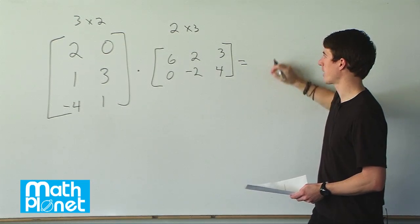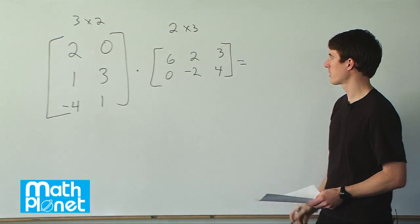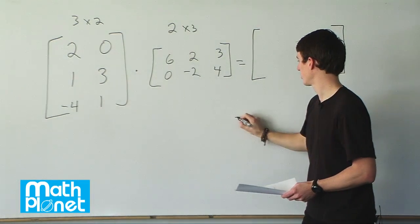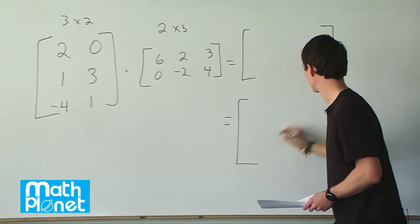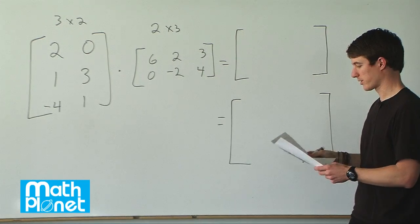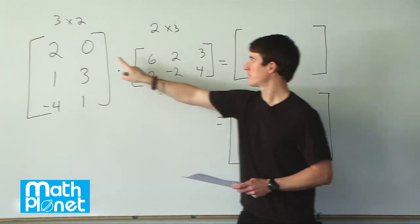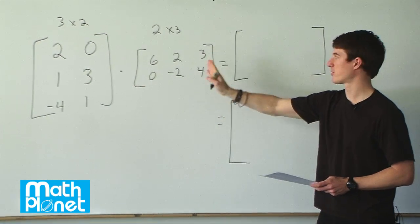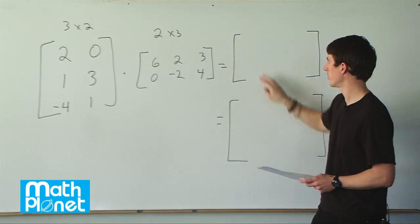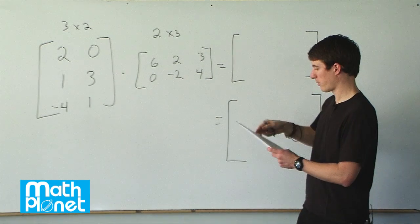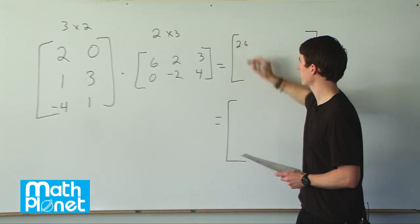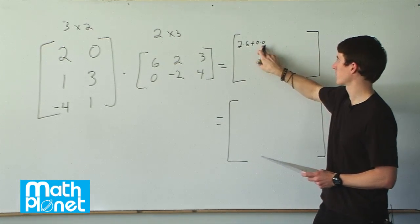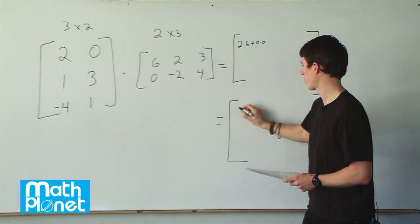So if we start to multiply that out, it's just a few different arithmetic steps and then we can get our final answer. It's going to be a 3 by 3. For the first entry, we do the first row times the first column. So we have 2 times 6 plus 0 times 0. That's just 0, so 2 times 6 gives us 12 in this first spot.